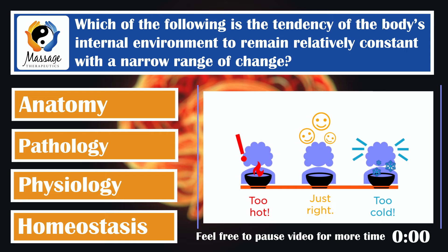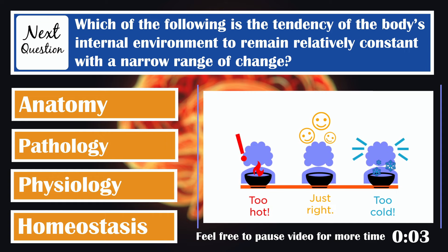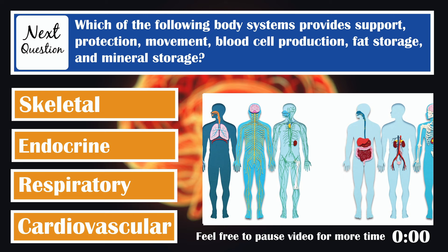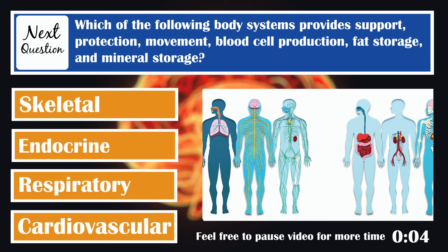Which of the following is the tendency of the body's internal environment to remain relatively constant within a narrow range of change? Homeostasis. Which of the following body systems provides support, protection, movement, blood cell production, fat storage, and mineral storage? Skeletal.